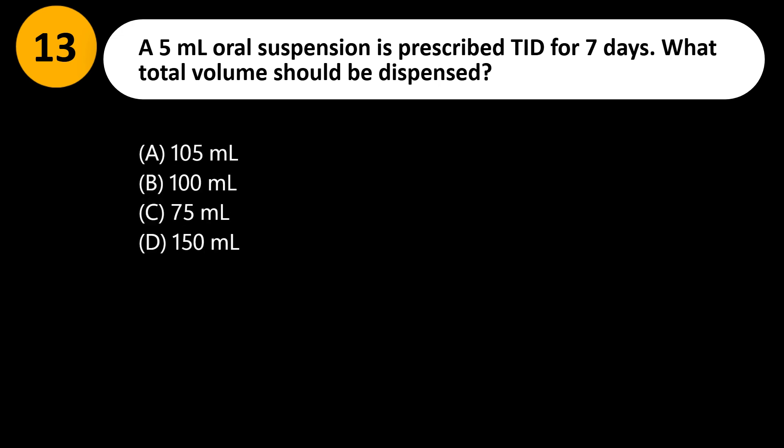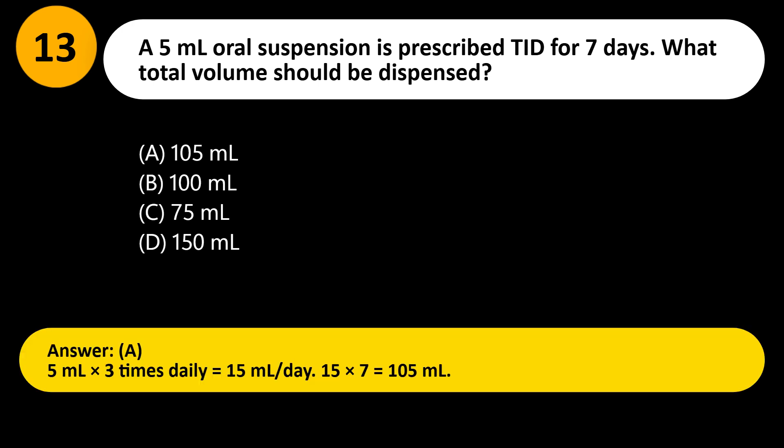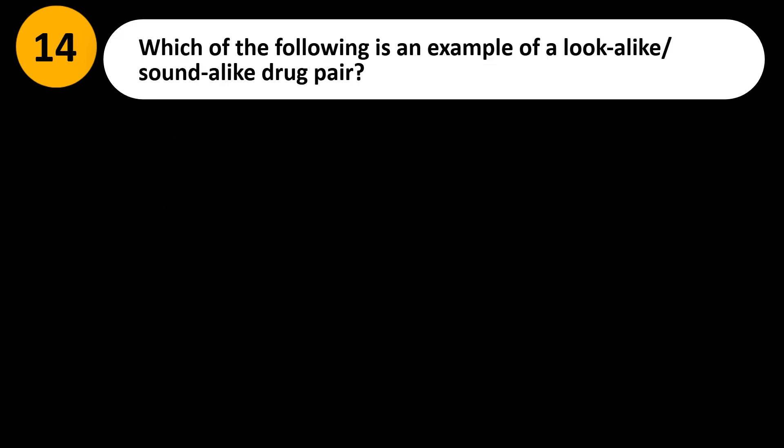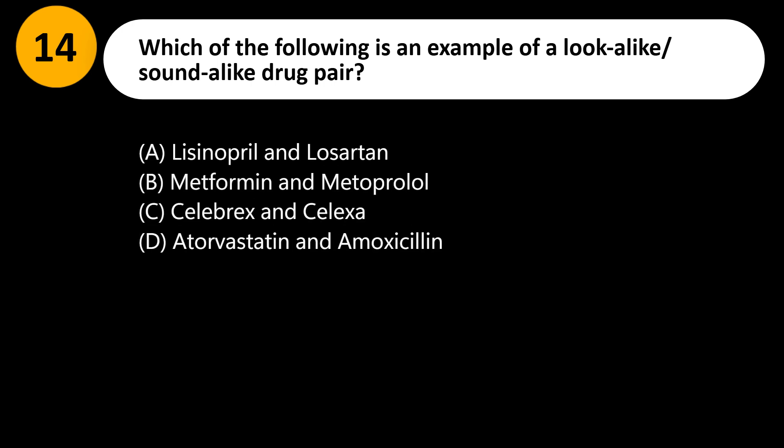A 5 milliliter oral suspension is prescribed TID for 7 days. What total volume should be dispensed? A) 105 mL, B) 100 mL, C) 75 mL, D) 150 mL. Answer: A. 5 mL × 3 times daily = 15 mL per day; 15 × 7 = 105 milliliters.